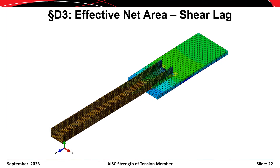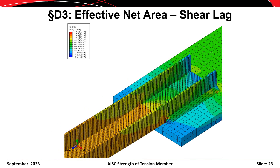Consider the finite element model of a channel welded to a gusset plate. When the channel is subjected to tension, the stress carried by the two flanges can't flow directly into the gusset plate — it has to make its way out of the flanges and into the web before it can be transferred into the gusset plate through the welds. Zooming in on the stress contours, red and orange colors indicate higher stress than green, showing a non-uniform stress distribution where the flanges are not 100% effective at the net section because they aren't connected directly to the gusset plate.